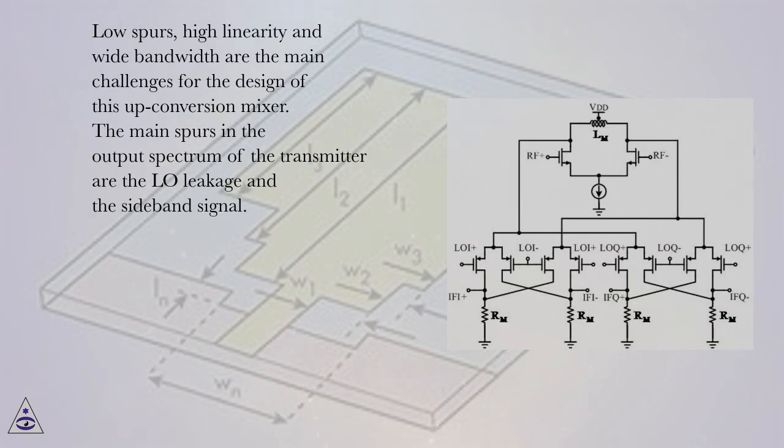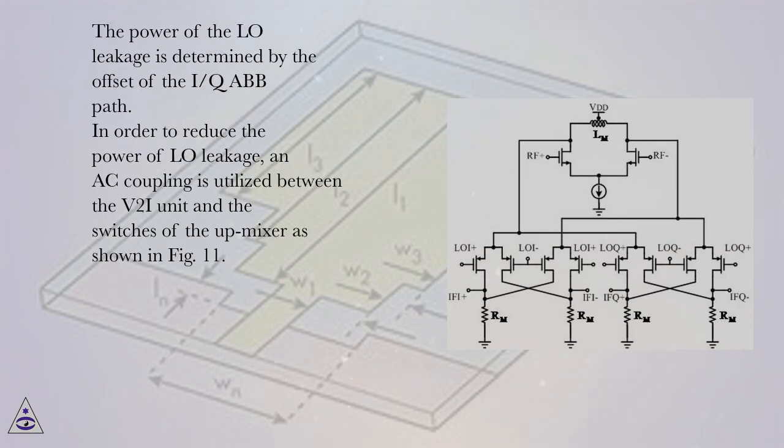The main spurs in the output spectrum of the transmitter are the LO leakage and the sideband signal. The power of the LO leakage is determined by the offset of the IQ ABB path. In order to reduce the power of LO leakage, an AC coupling is utilized between the V2I unit and the switches of the up-mixer as shown in FIG.11.